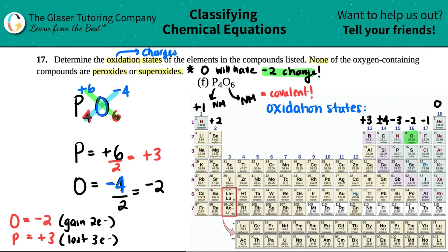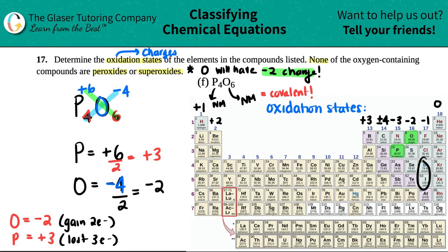I want you to note that phosphorus is actually in the negative three group on the periodic table. But sometimes the trend isn't always going to be true, especially for elements closer to the middle — those elements and the halides can have multiple charges, so watch out for that. Just know that both elements can't be negative: one has to be positive and one has to be negative, and that tells you something.